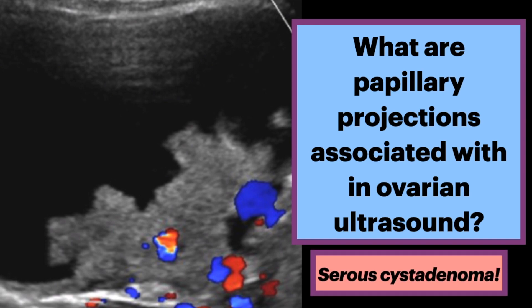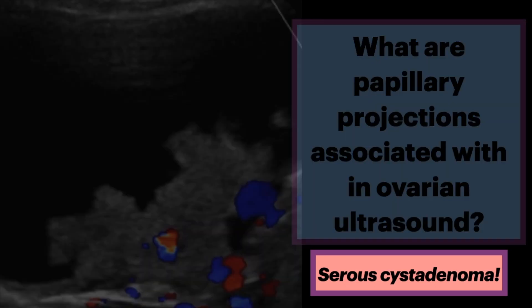Typically, serous ovarian tumors either have a few septations or are unilocular, commonly with vascular papillary projections, as seen in this case.